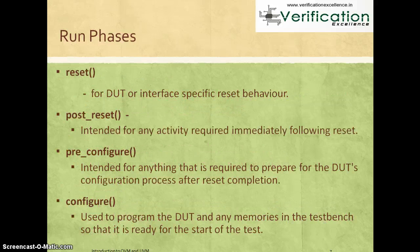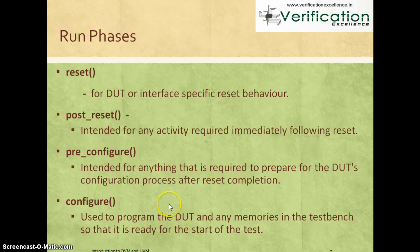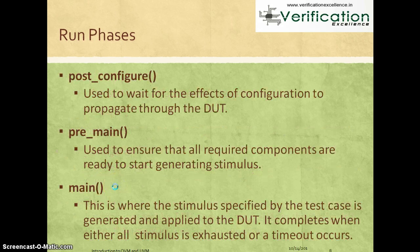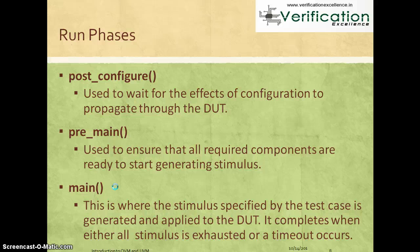The reset phase is where you do anything specifically needed for the DUT or interface, such as specific reset behaviors. Post-reset is intended for any activity required immediately following reset. Pre-configure is for preparing the DUT configuration soon after reset is complete and before you start the configuration process. Configure is where you program the DUT — register programming, memory preloads, etc. Post-configure is for waiting for the effects of configuration to propagate to the DUT. Pre-main ensures all required components are ready to start generating stimulus.